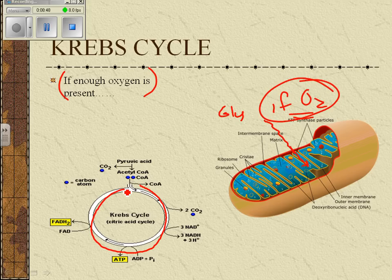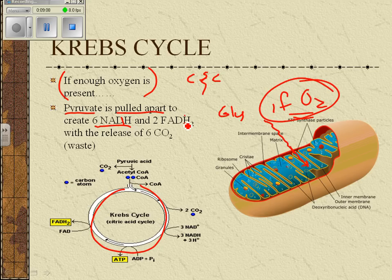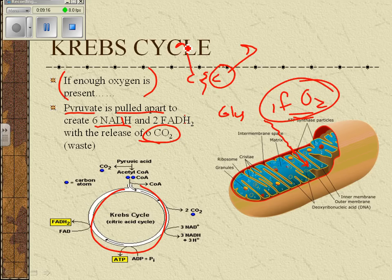The Krebs cycle is a rather complicated process of eight chemical reactions where pyruvate is pulled apart. Those chemical bonds between the carbons are broken. We create more energy taxis by grabbing electrons and putting them on NADH and FADH2. Carbon dioxide — the release of these carbon atoms along with oxygen — is waste. It diffuses out of the mitochondria into the cell, out of the cell into the blood, and is exhaled in the lungs.